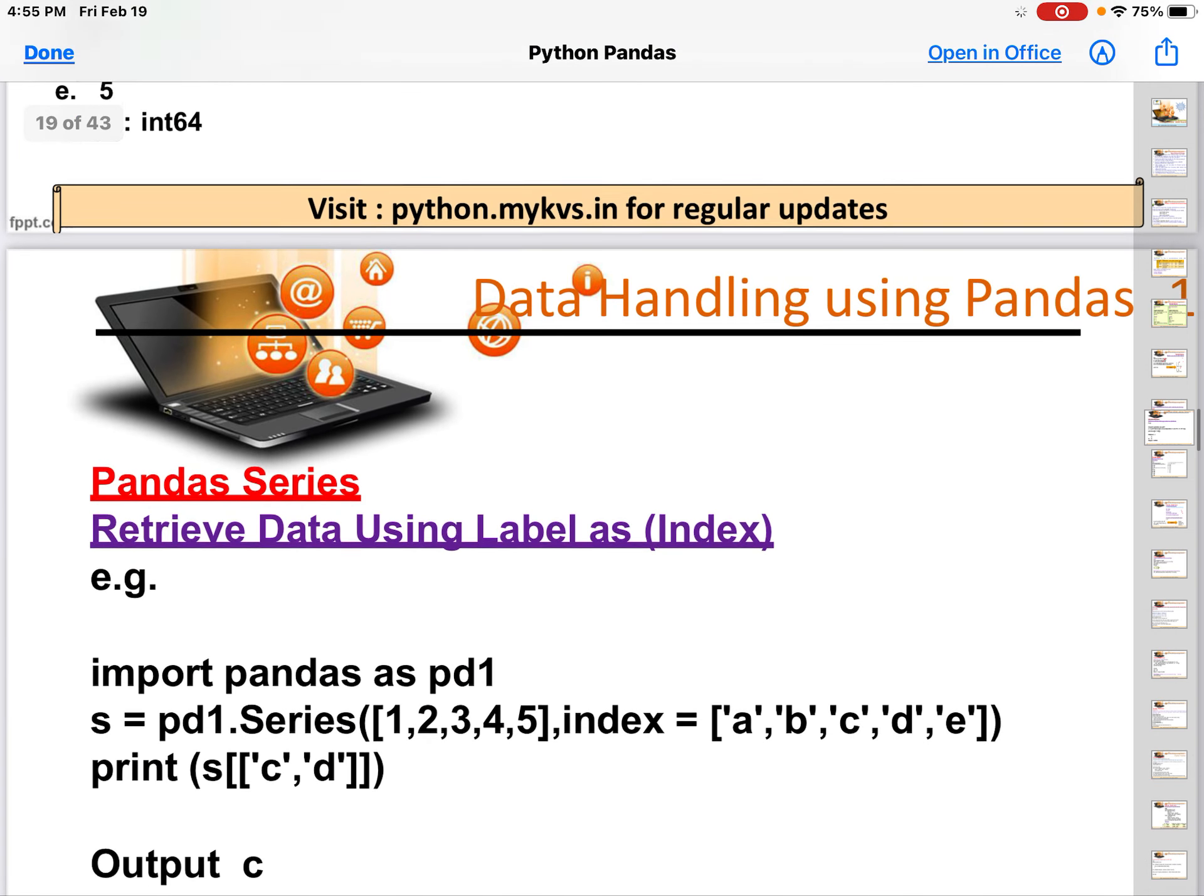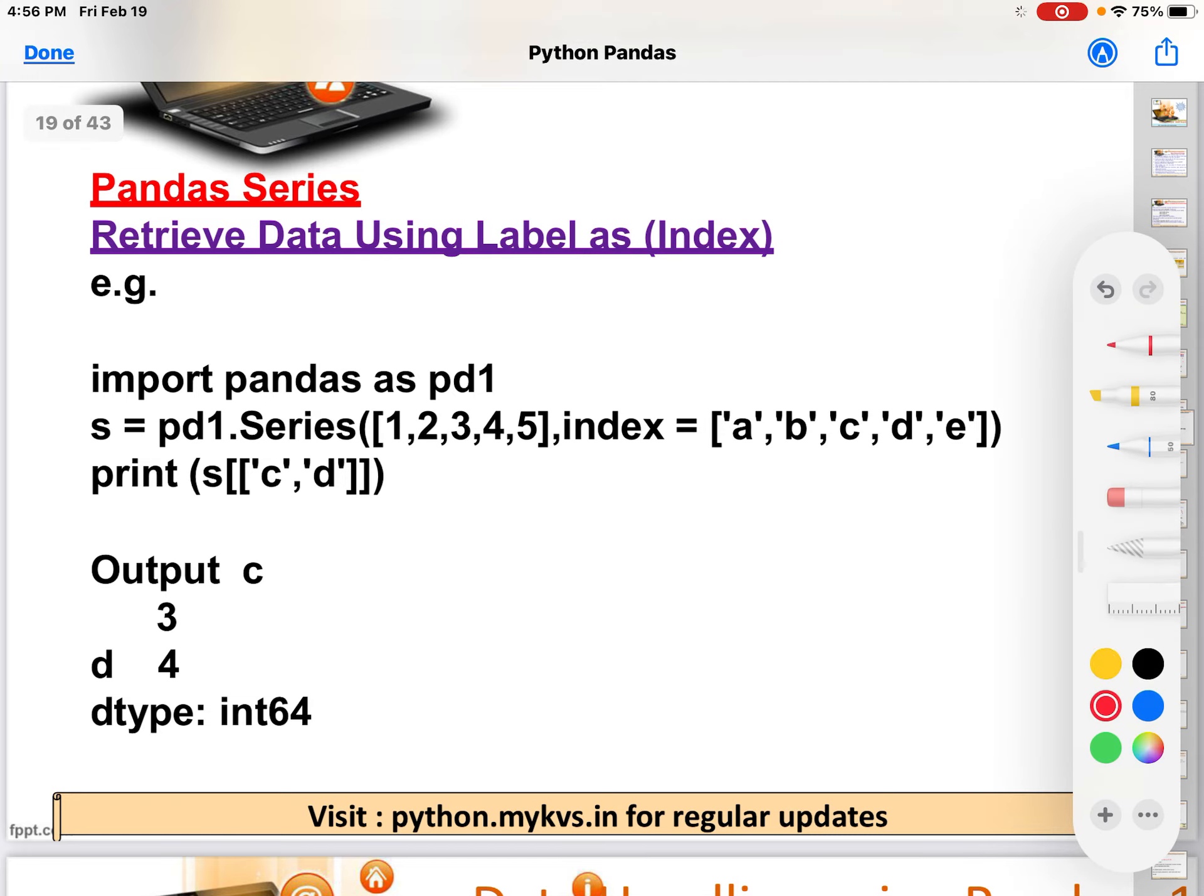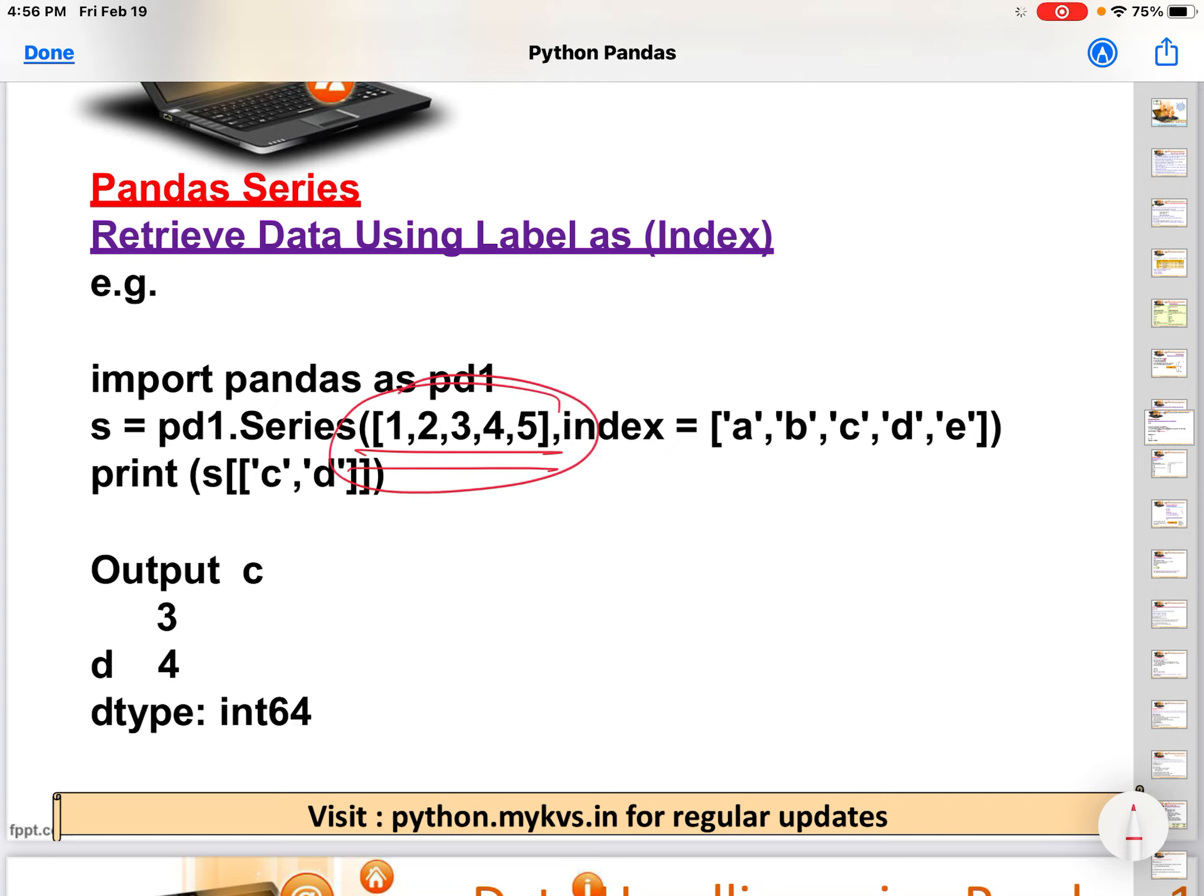Now we can retrieve data using index level. For example, suppose if we have defined a series, so this is the series 1, 2, 3, 4, 5. Now you want to retrieve the values of c and d. So 1, 2, 3, 4, 5, so what will be the value? 3 and 4, okay. So output will be c: 3, d: 4. Understood? So retrieving data using label, label means by the help of index we can get back the values.